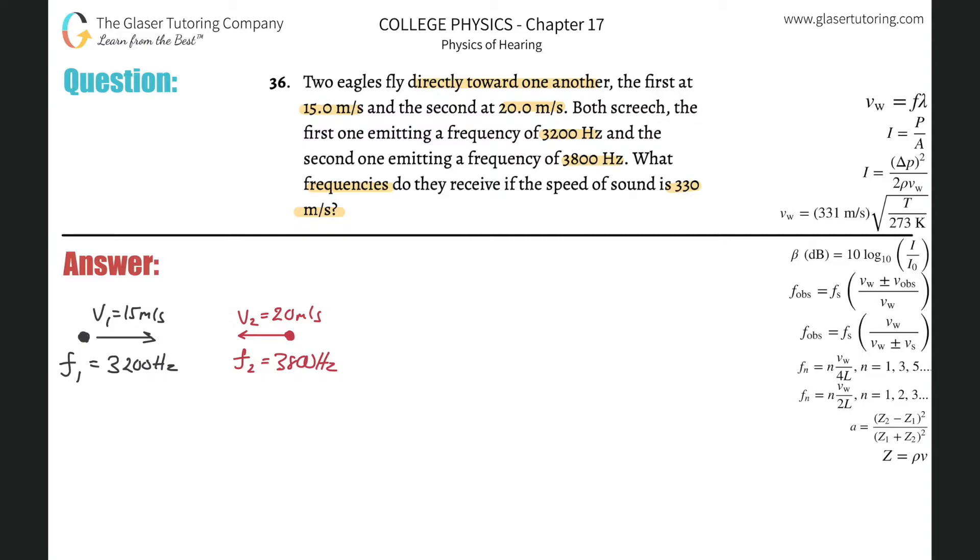Alright, so basically this problem deals with two things that are moving. So when we look at our formulas over here on the right-hand side, the Doppler effect formulas, we have to make some alterations there. So one thing you can memorize, by the way, is this formula if you'd like. The frequency of the observer is going to be equal to the frequency of the source multiplied by the velocity of sound in air plus or minus the velocity of the observer divided by the velocity of sound in air plus or minus the velocity of the source. You can remember this single formula if you'd like.